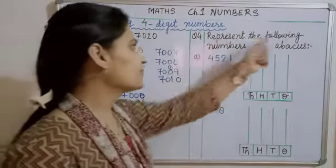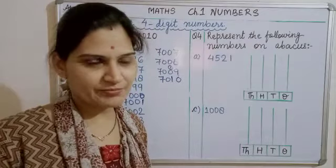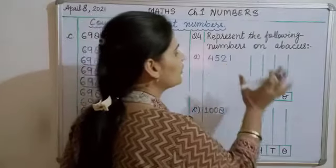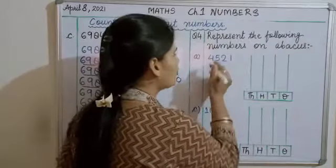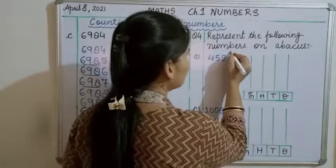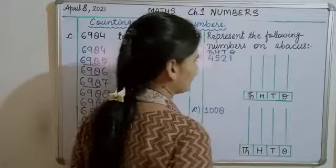Let's go to the next question. Represent the following numbers on abacus. आप सबने abacus देखा है। Abacus में rods होती है उसमें हमें कुछ beads बनाने होते है। This is a 4 digit number. You have to place it on this abacus. 4521. Okay यह 1s place है यह 10s place यह 100s और यह 1000s place है।